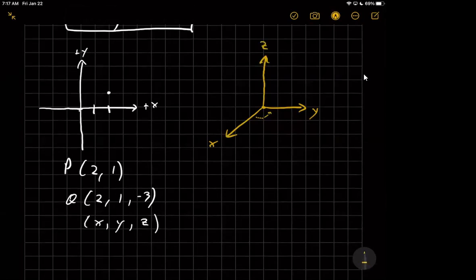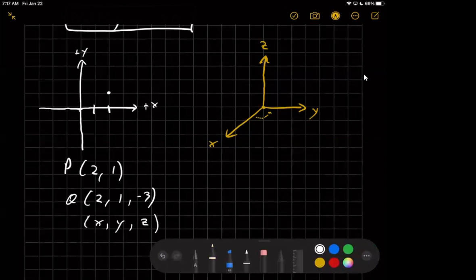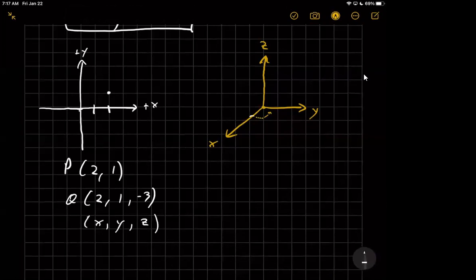So now how would I plot the point two, one, negative three? Well, I would come out two units in the x direction, which would be about that far. There's a perspective shift, so notice I've made like two little marks in the x direction, and then you need to go over one unit in the y direction. So that would be over, so we would go two in the x direction, one in the y direction,